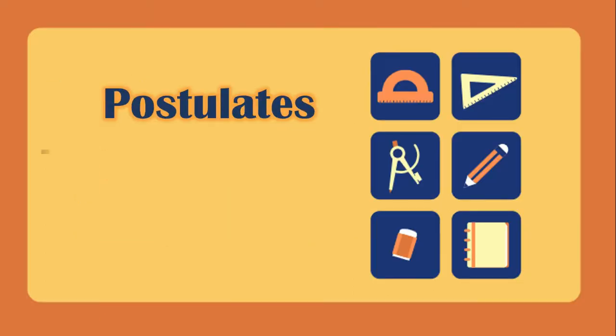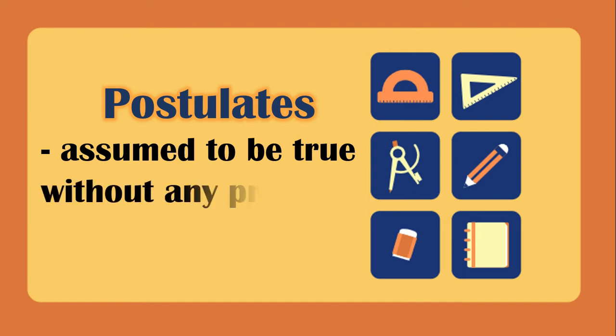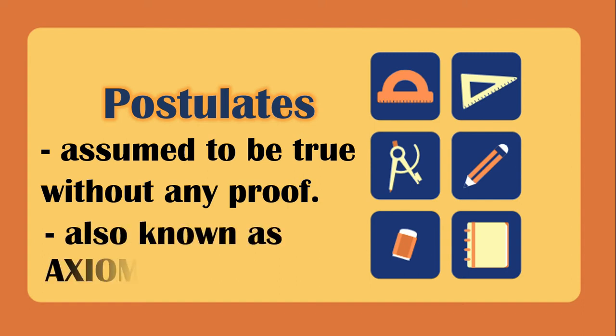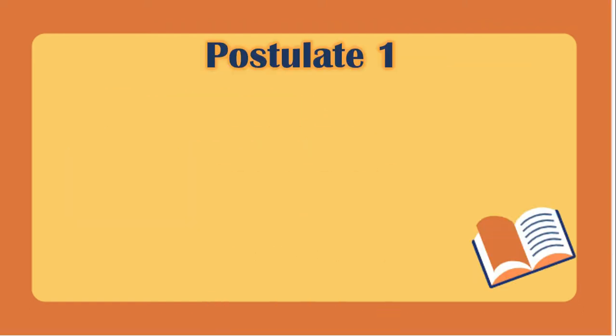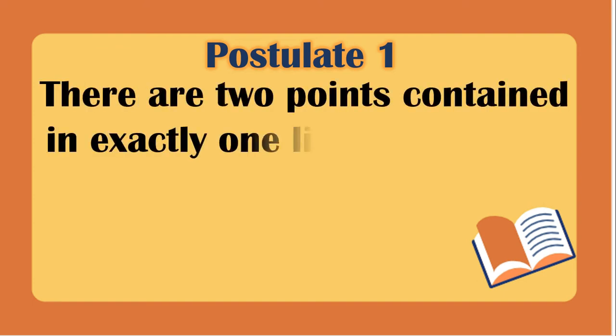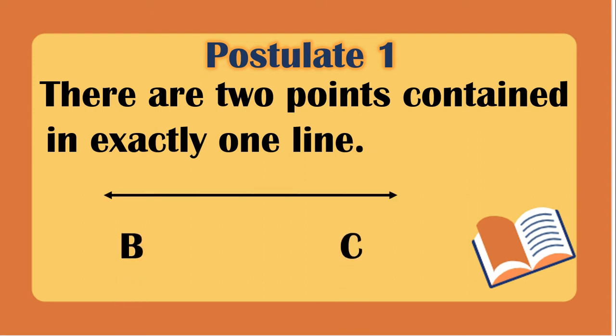Postulates are assumed to be true without any proof — we use them but they are not yet formally proven. They are also called axioms. Postulate 1: there are two points contained in exactly one line. Postulate 2: a line contains infinitely many points, meaning many points lie on that line.